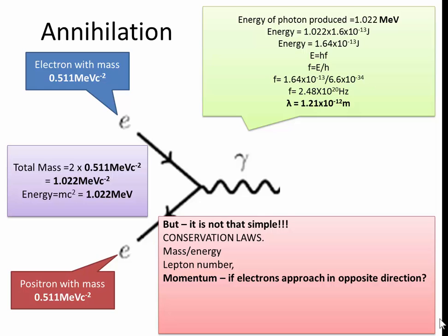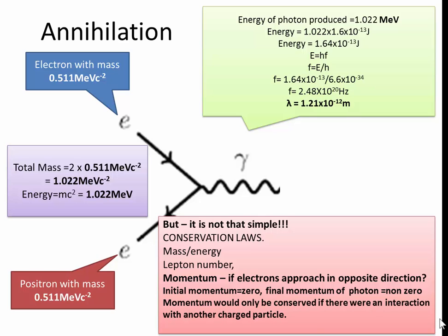But what about the momentum? If the electrons approach in opposite direction, the sum of the momentum will be zero. But then you have a photon which has a non-zero momentum. So this cannot exactly happen. There has to be another charged body which is going to take some of the momentum. So a good example would be a nucleus. So you can only produce a photon, a single photon, if there's another charged body like a nucleus to take some of the momentum.